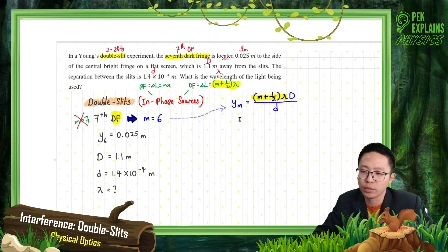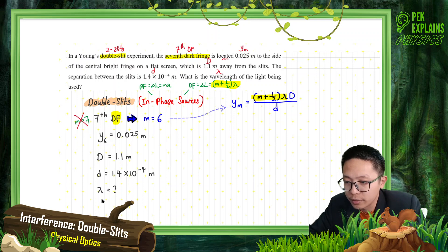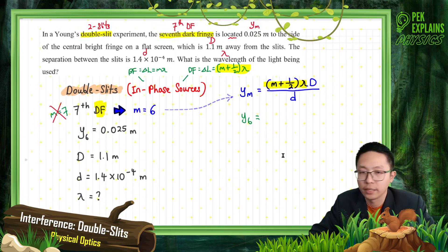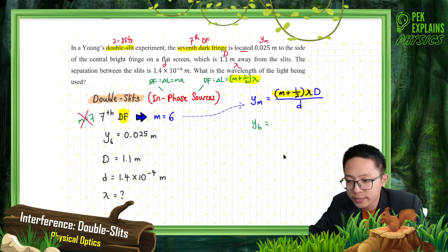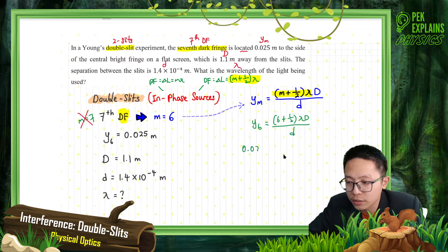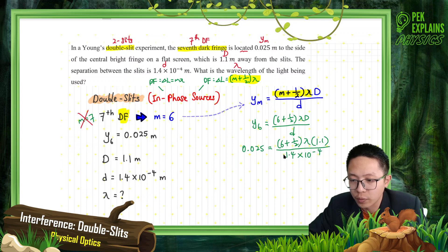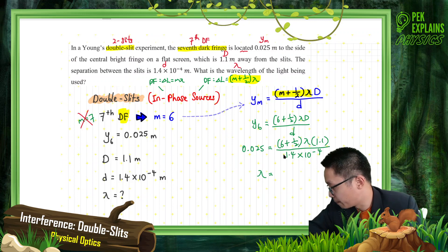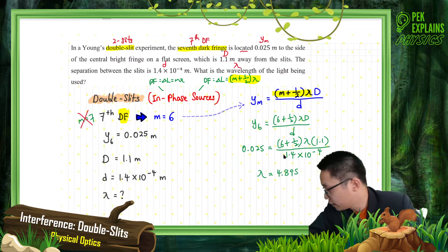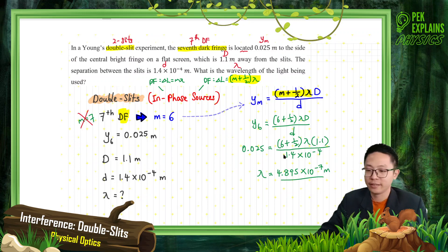Let's write it down. We have all the information already - just need to find lambda. So Y₆ equals (6 + 1/2) × lambda × D / d. Y₆ is 0.025, then (6 + 0.5) × lambda, big D is 1.1 meter, and small d is 1.4 × 10⁻⁴. Solving for lambda gives 4.895 × 10⁻⁷ meter. That is the answer - that's the wavelength lambda. Thank you for watching, let's move on to the next video.